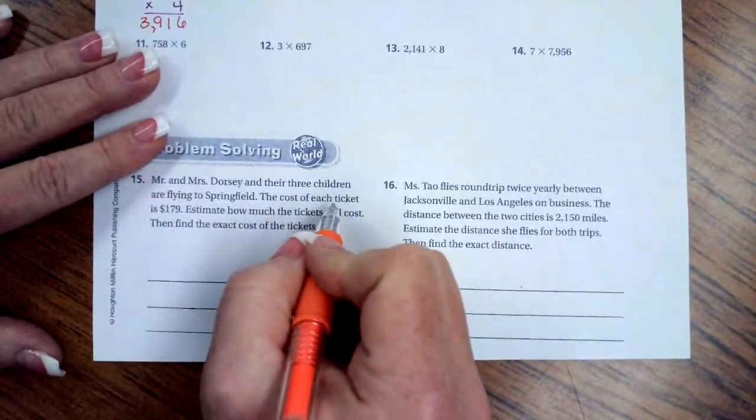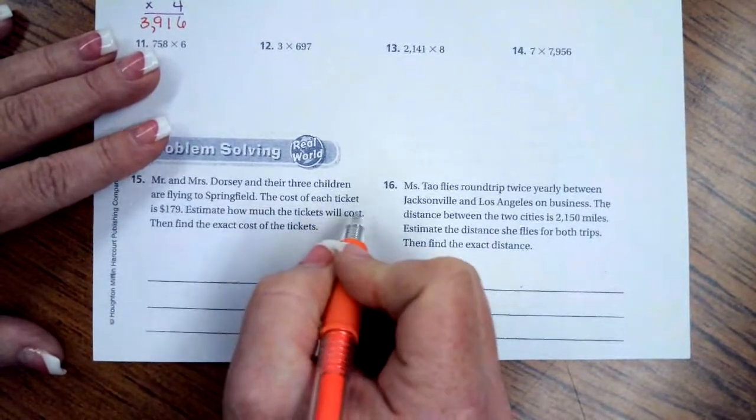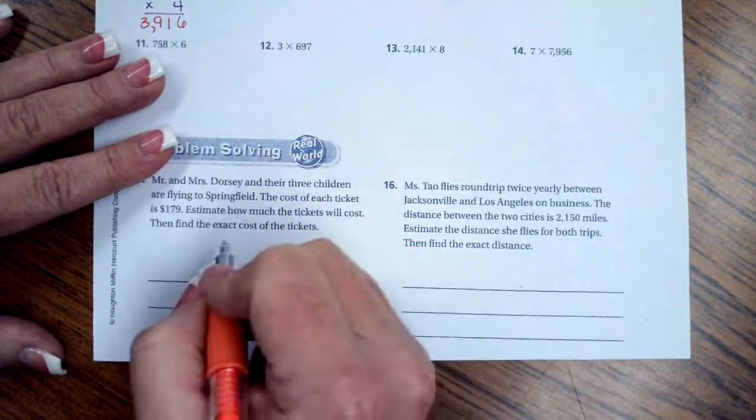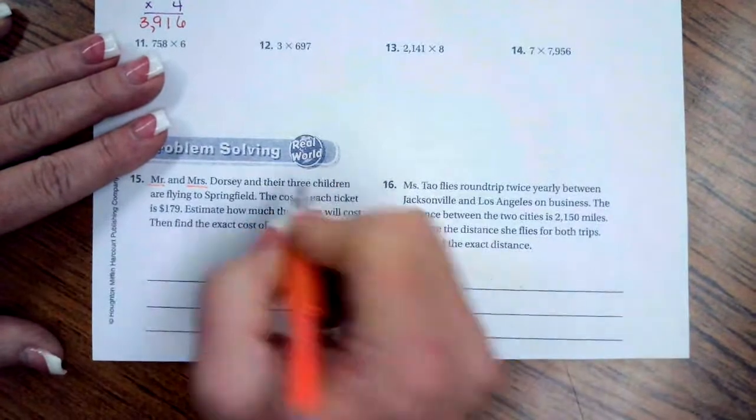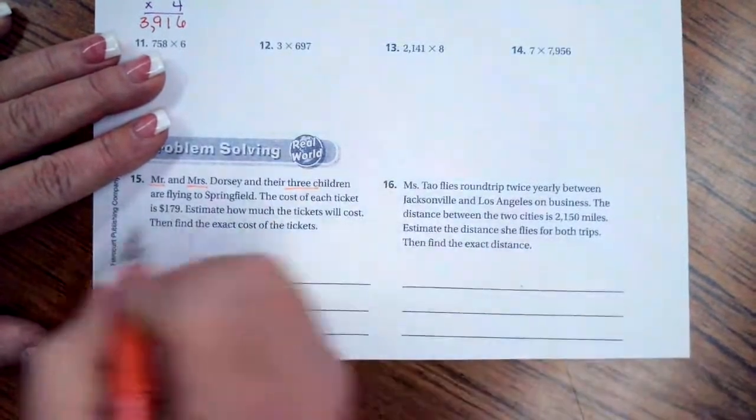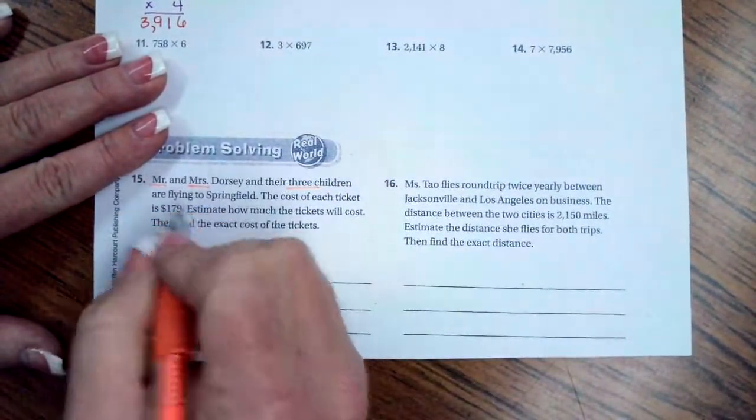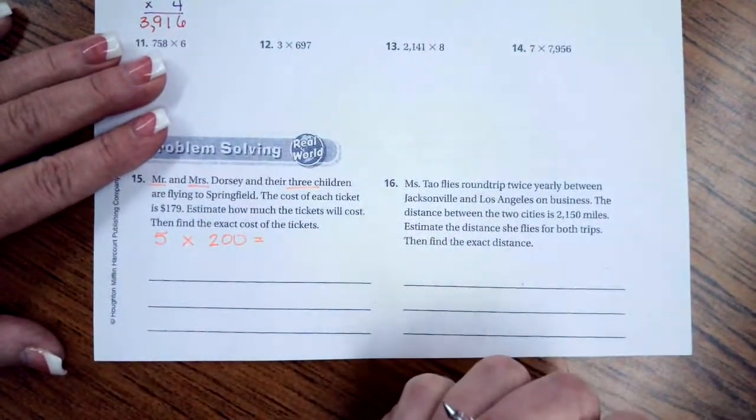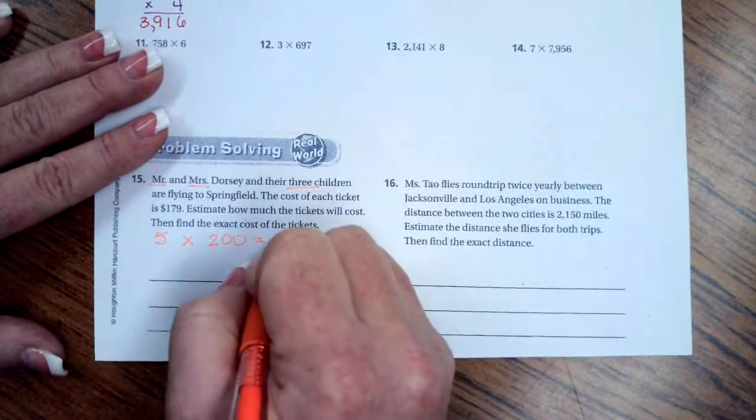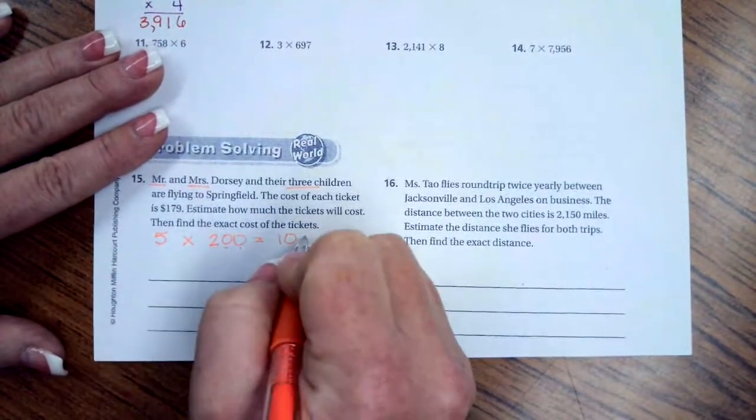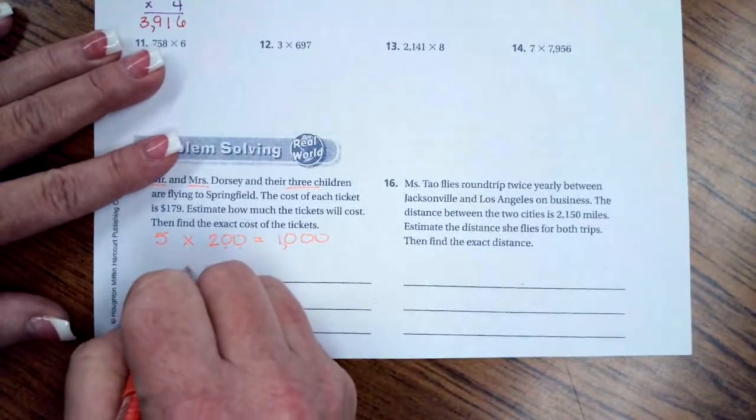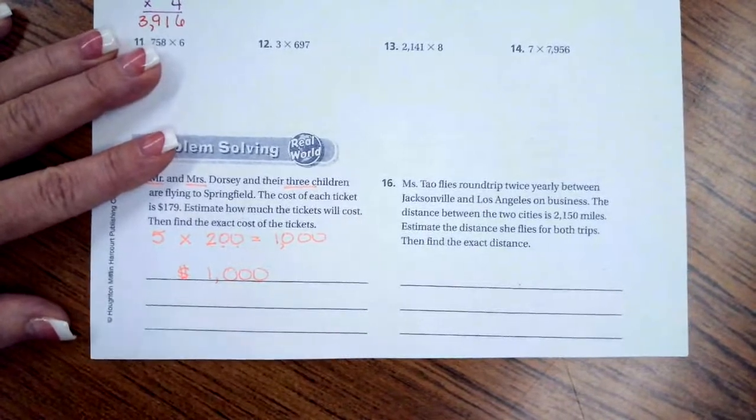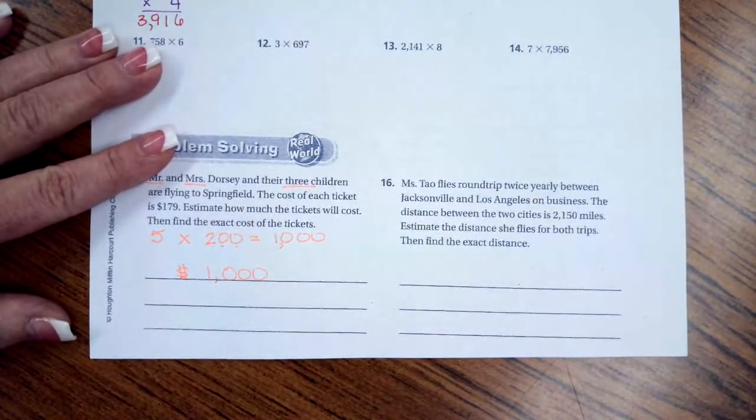Mr. and Mrs. Dorsey and their three children are flying to Springfield. The cost of each ticket is a hundred and seventy-nine dollars. Estimate how much the tickets will cost. Well there's Mr. and Mrs. Dorsey and their three children, so that's five people. Then a hundred and seventy-nine dollars is approximately two hundred dollars each. Five times two is ten, and then I'm going to add on my two zeros, so it will be approximately one thousand dollars.